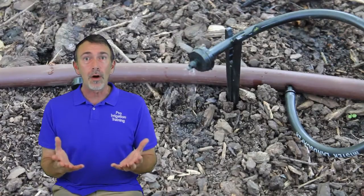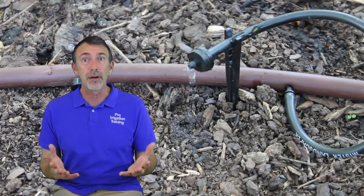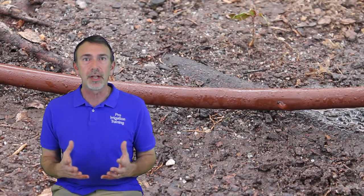We'll go through all of the parts. I'll teach you about vacuum relief valves, drain valves, filters, pressure regulators, bubblers, drippers, micro-sprays, all these things that go into making a successful drip irrigation system.